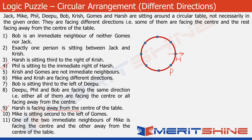Now try finding other statements connected to either Phil or Harsh. For example, statement 3 says that Harsh is sitting third to the right of Krish. The important part to note here is that the direction of Harsh is given with respect to the direction of Krish and not the other way round. Since we do not know in what direction Krish is facing, we'll have to make two cases.